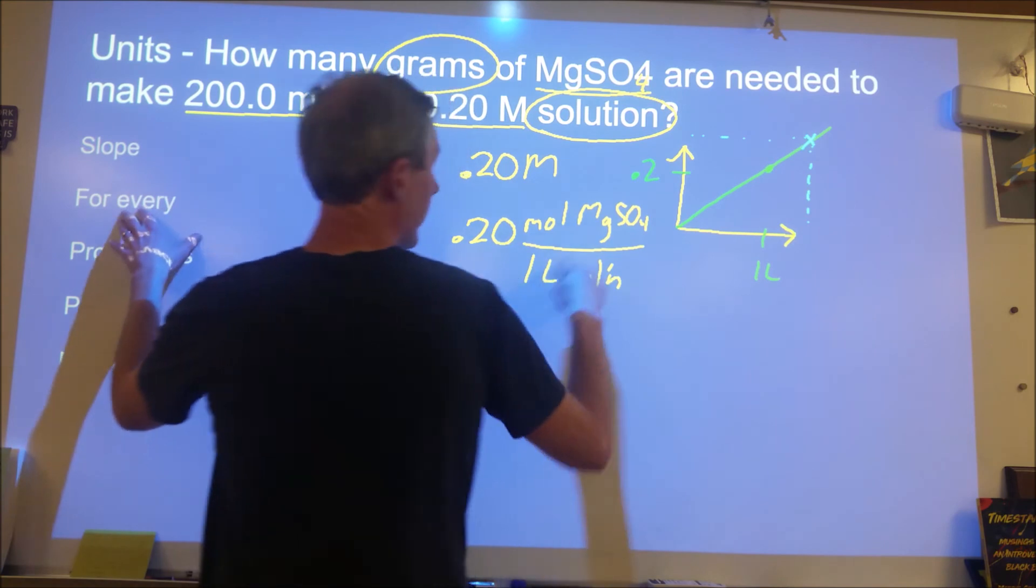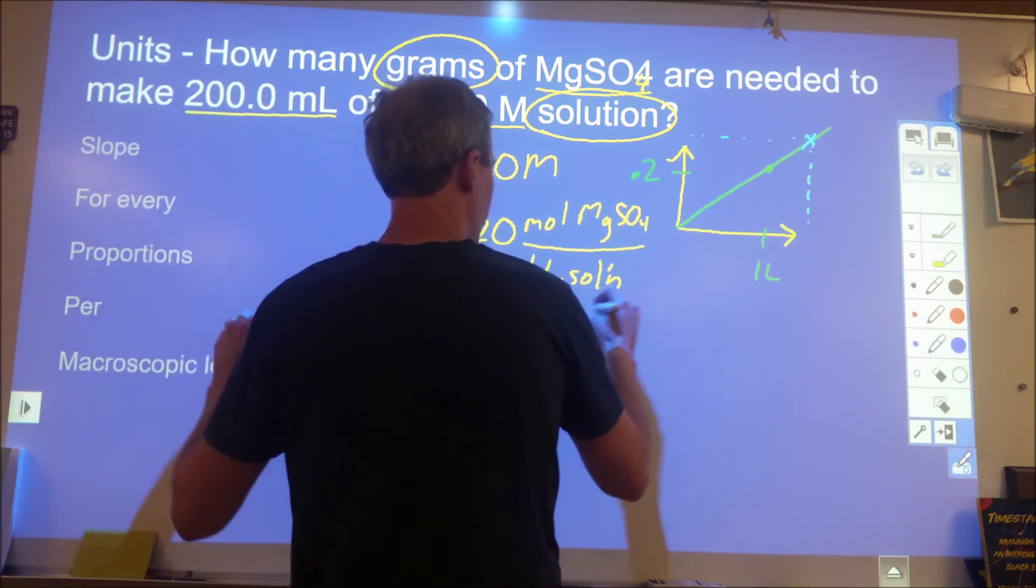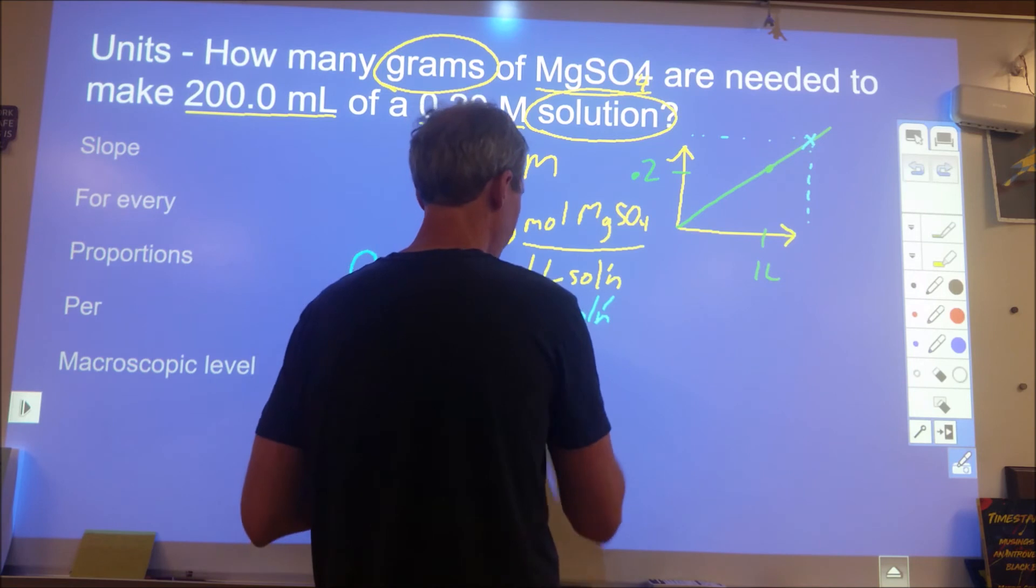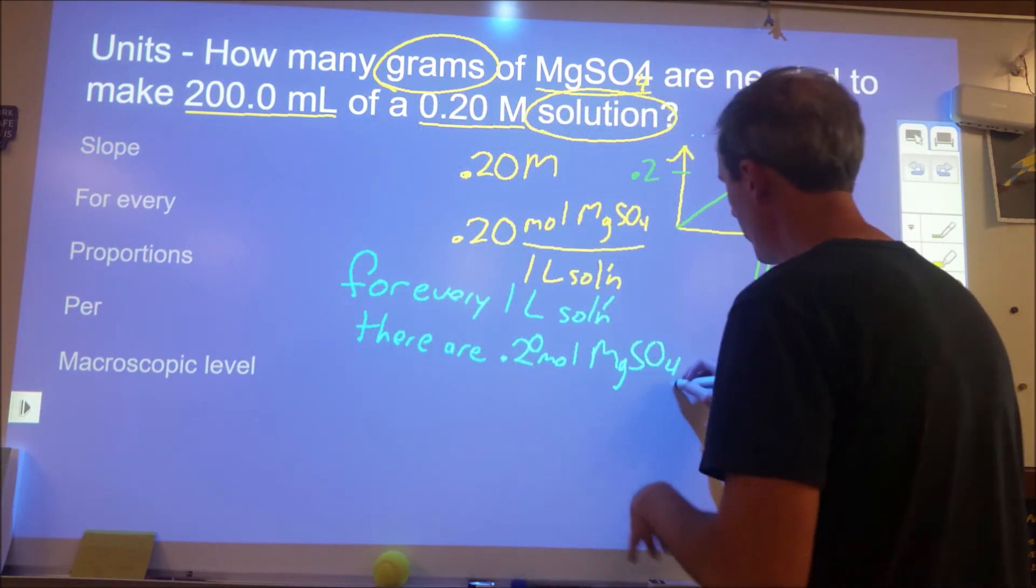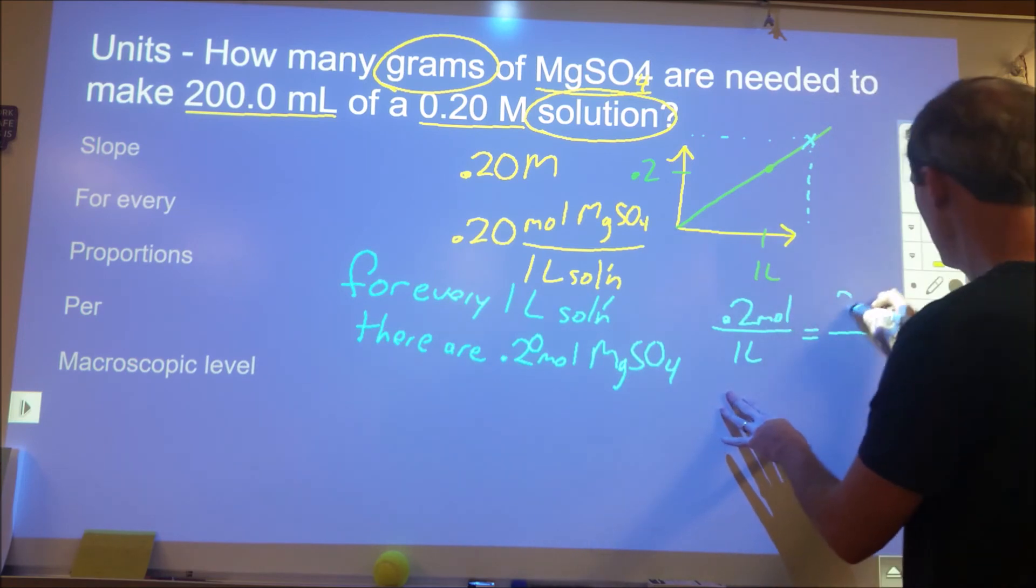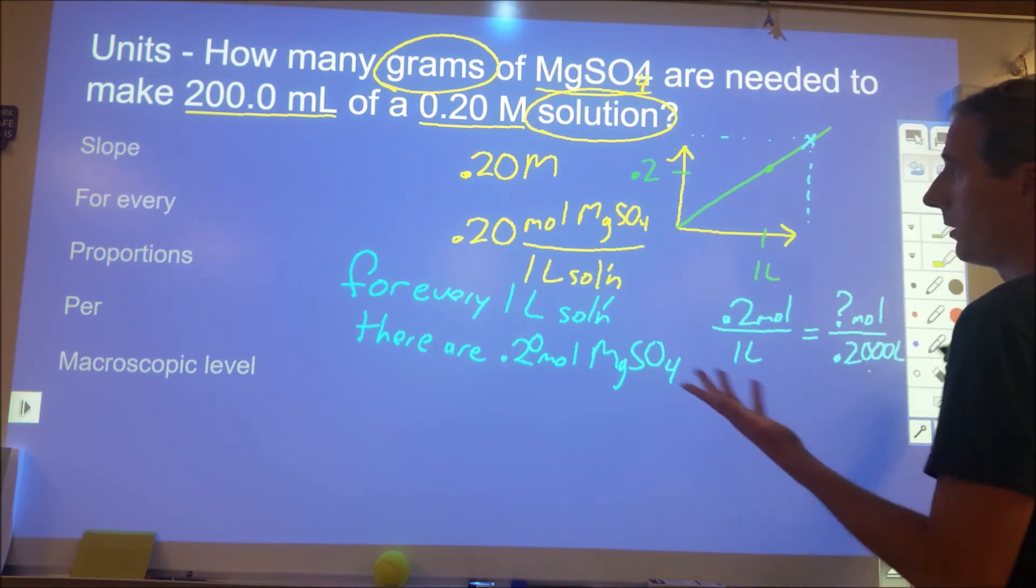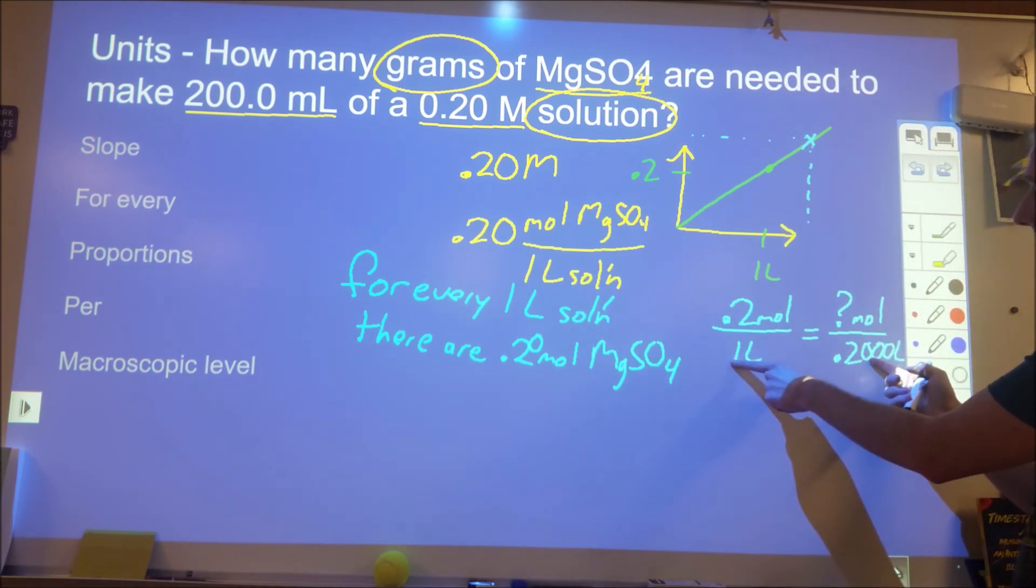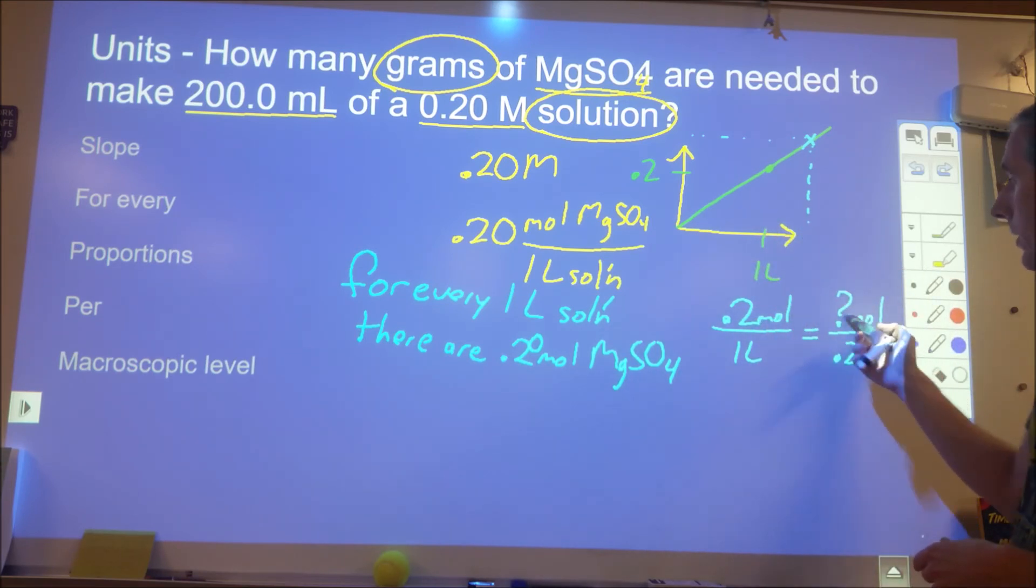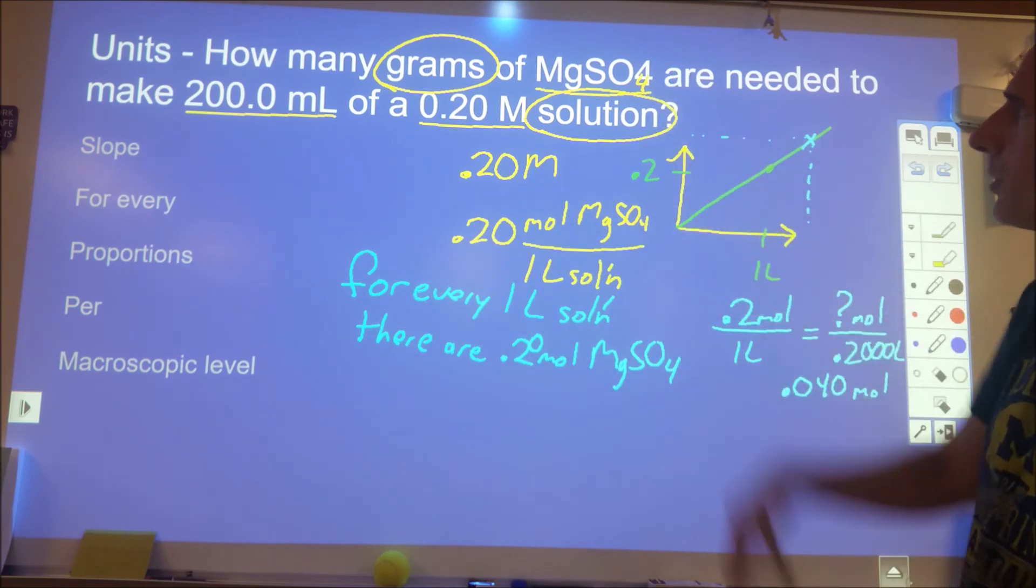So a couple tools for that. So one is we can take this slope or this set of units here and write it for every statement. Or for every statement for this would be for every one liter of solution, there are 0.2 moles of magnesium sulfate. And we can use that to set up proportional reasoning where we say, okay, well, if I have 0.2 moles for every one liter, then how many moles would I have if I had 200 milliliters, which is 0.2 liters. So here I can say, okay, well, this is five times less. So this must also be five times less if these are the same proportion. These still come out to that slope of 0.2. So now I know that this is going to be 0.040 moles of magnesium sulfate. And now I can actually get through and solve the question pretty easily because I just need to change that into grams.